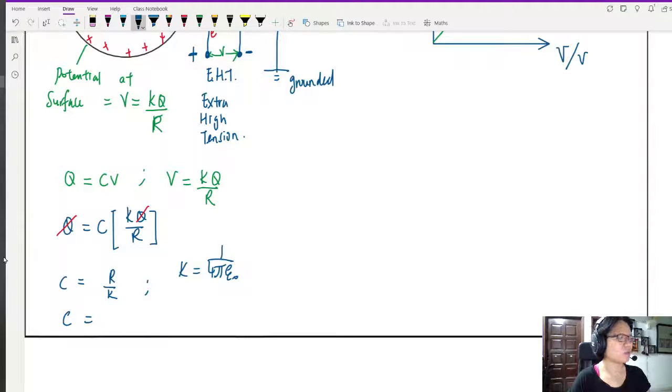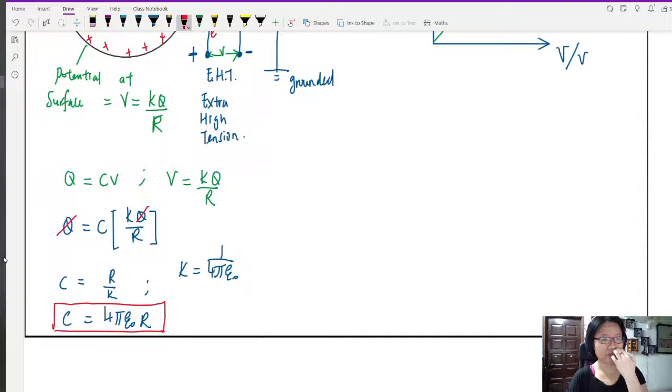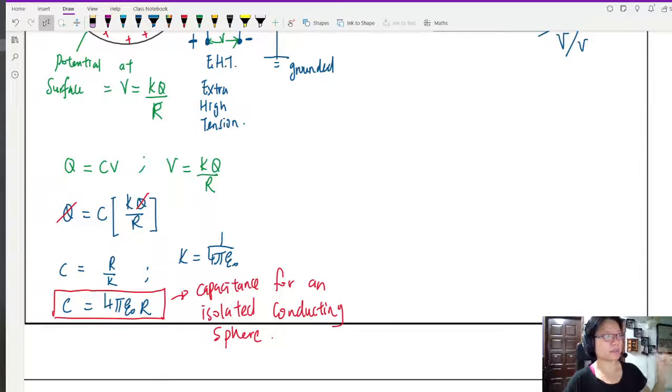So hence, this C can be written as, if I flip over, 4 pi epsilon not R, because 1 over K will be 4 pi epsilon not R. So this is the capacitance of an isolated conducting sphere.